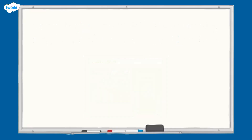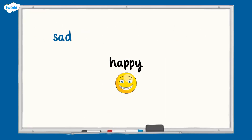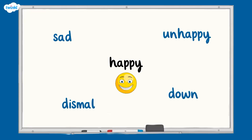Some words have lots of antonyms, like happy. Its antonyms include sad, unhappy, dismal and down.